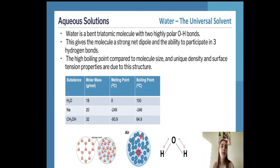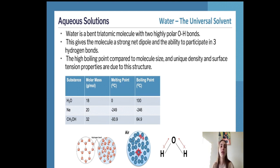Methanol, with a molar mass of 32, has a hydrogen bond due to its O-to-H group and larger dispersion forces, yet has a much lower melting and boiling point than water. This is because water has two locations for hydrogen bonding whereas methanol only has one. Water molecules are therefore more strongly attracted to each other, making them harder to break apart, resulting in a higher melting and boiling point.